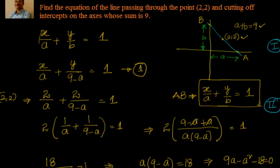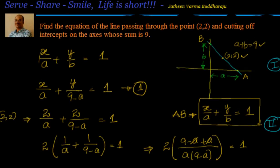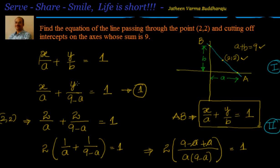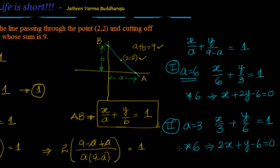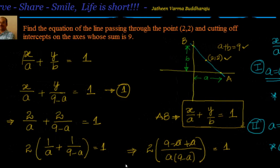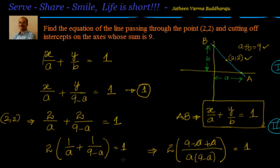So that's an interesting problem. To summarize: we were given a line passing through (2,2) with intercepts summing to 9. We used the intercept form x/a + y/b = 1, set b = 9-a, and substituted (2,2) to solve for 'a', getting a = 6 or a = 3. Substituting back gives two equations: x + 2y - 6 = 0 and 2x + y - 6 = 0, both satisfying the conditions. The intercept form is the easiest approach when intercepts are mentioned.